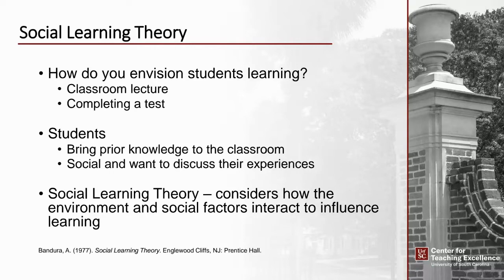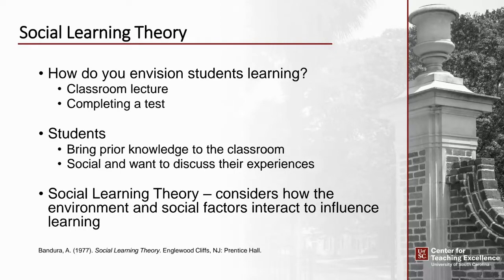One that we will touch on today is social learning theory. The main point is that it considers how the environment and social factors interact to influence learning. It really emphasizes the importance of students observing and modeling the behaviors, attitudes, and emotional reactions of others to assist with their learning. From within social learning theory came this idea of developing a community of learners — specifically, communities of learners that are immersed in social collaborating and learning environments.